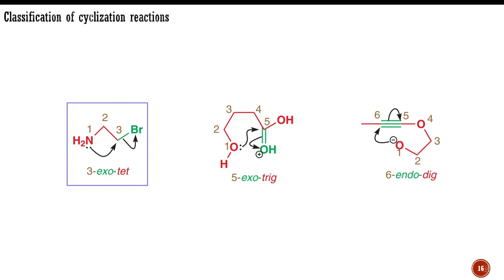The ring being formed has three members, the breaking carbon-heteroatom bond is outside the new ring and is exo, the carbon carrying the leaving group is a tetrahedral atom abbreviated as tet. This system places the first cyclization as 3-exo-tetrahedral.